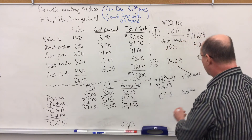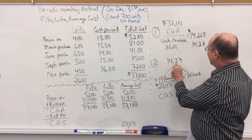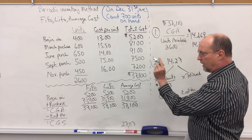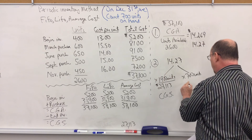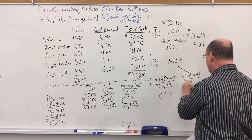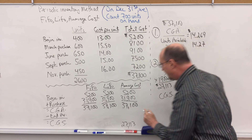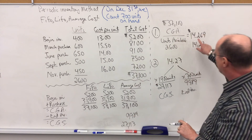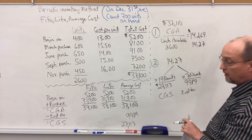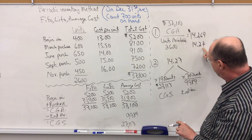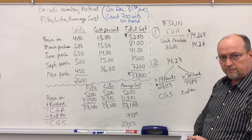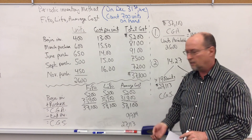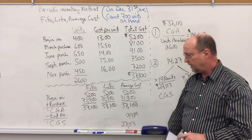Or we can multiply the $14.27 — the average cost per unit — times 700 units, and that will be $9,989. We're going to have a slight rounding error because we truncated the decimal; it actually goes out an awfully long way, so we simply cut it down to the nearest penny, and that'll get us pretty darn close. And that's how you calculate ending inventory and cost of goods sold using the average cost method.